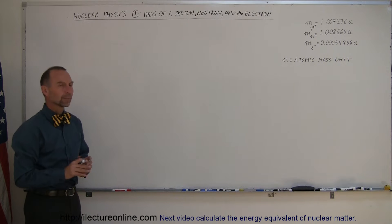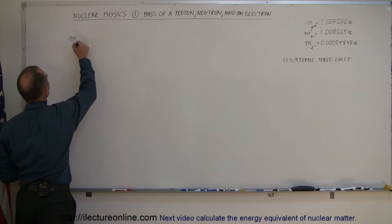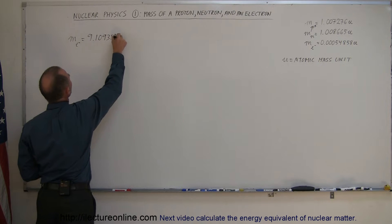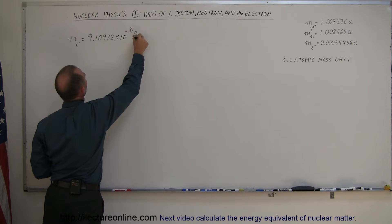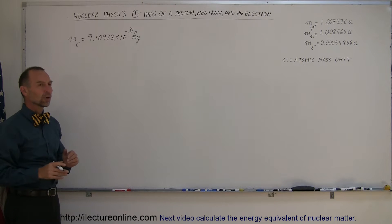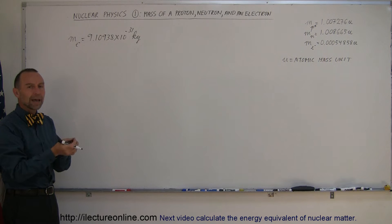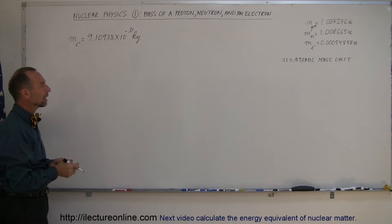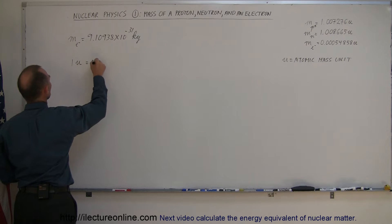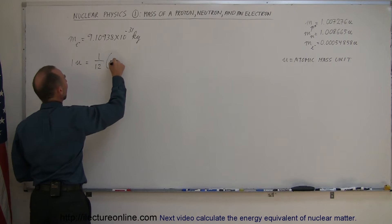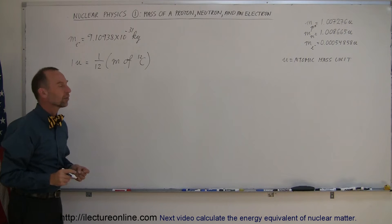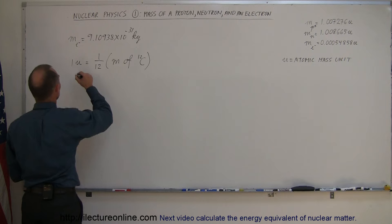Where do those units come from? If we write the mass of an electron in terms of kilograms, you would get 9.10938 times 10 to the minus 31 kilograms, at least to five decimal places. You can see that 10 to the minus 31 is a very, very small number. So they wanted to come up with a new unit far more associated with the mass of a single atom, and they came up with atomic mass units. The definition is that 1u is equal to exactly 1 twelfth the mass of a stable carbon atom with 12 nucleons — meaning six protons and six neutrons.